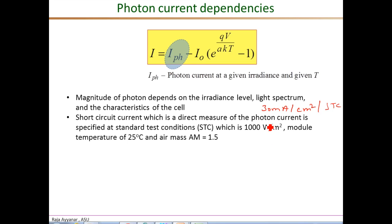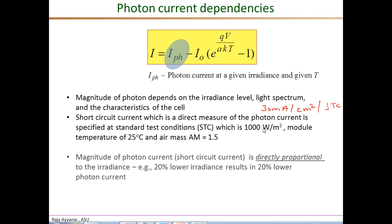Now, how do we get the short circuit current or the photon current at other conditions? The photon current magnitude is directly proportional to the irradiance level. For example, if the irradiance goes down by a factor of 20 percent, then the photon current goes down almost exactly 20 percent.